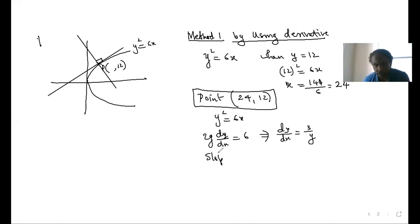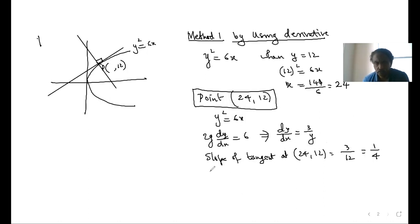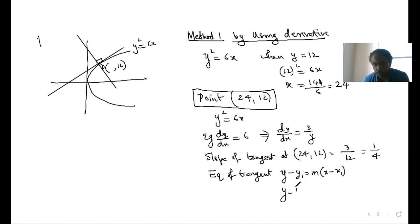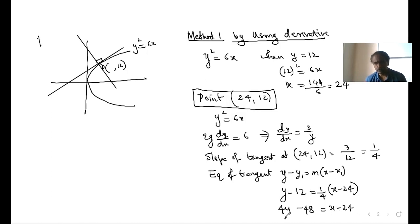The slope of the tangent at (24, 12) is 3 upon 12, that is 1 by 4. Now write the equation of tangent using slope-point form: y minus y1 equals m times x minus x1. So y minus 12 equals 1 by 4 times (x minus 24). Cross-multiplying gives 4y minus 48 equals x minus 24, which rearranges to x minus 4y plus 24 equals 0. Keep x always positive. This is the equation of tangent.